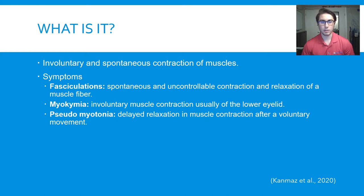Symptoms of this syndrome include fasciculations, myokymia, and pseudomyotonia. Fasciculations are spontaneous and uncontrollable contractions of muscle fibers, often described as a bag of worms. Myokymia is the involuntary closing of the lower eyelid, and pseudomyotonia is the delayed relaxation of muscle after voluntary contraction — like if you were going to grab a cup and when you go to release it, you are mentally releasing it but your hand is still grasped around the cup.